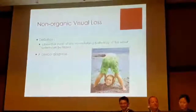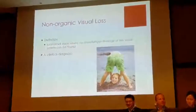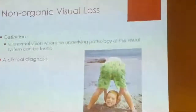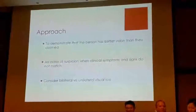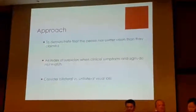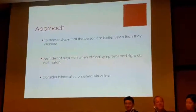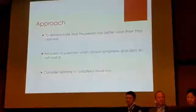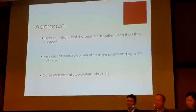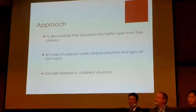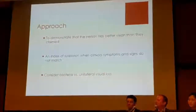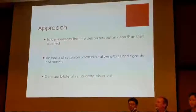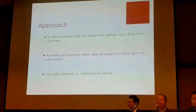Clinical suspicion happens as soon as you think something is a little bit out of place. The approach is that you really need to show the vision is what that person claims it is, and the index of suspicion happens when the symptoms and the signs just don't marry up.